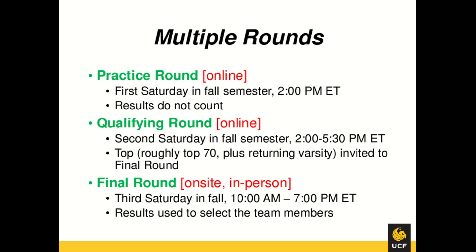The second Saturday in fall, we do what we call the qualifying round. This is online as well, so you just do it from home. The objective of the qualifying round is to select some students to advance to the final round. The university gives us one lab, so we have to make sure everybody fits, and that's why we have the qualifying round. The final round will be in person on the third Saturday in fall semester, and it is an entire day event.